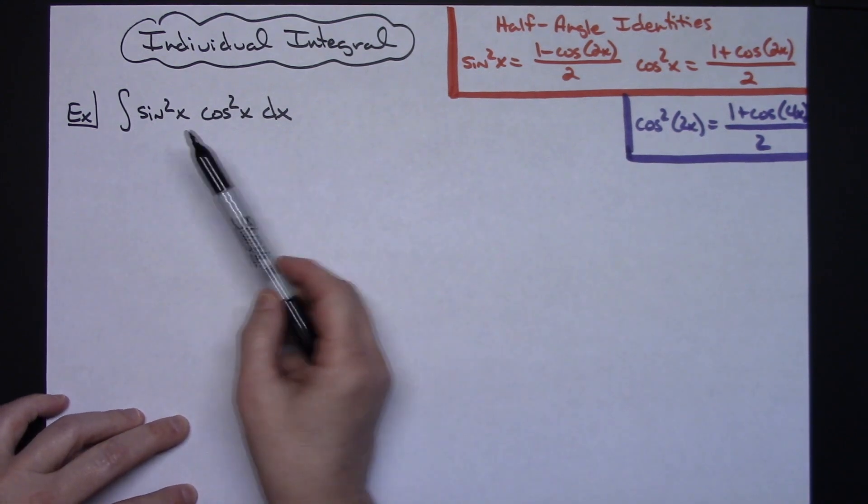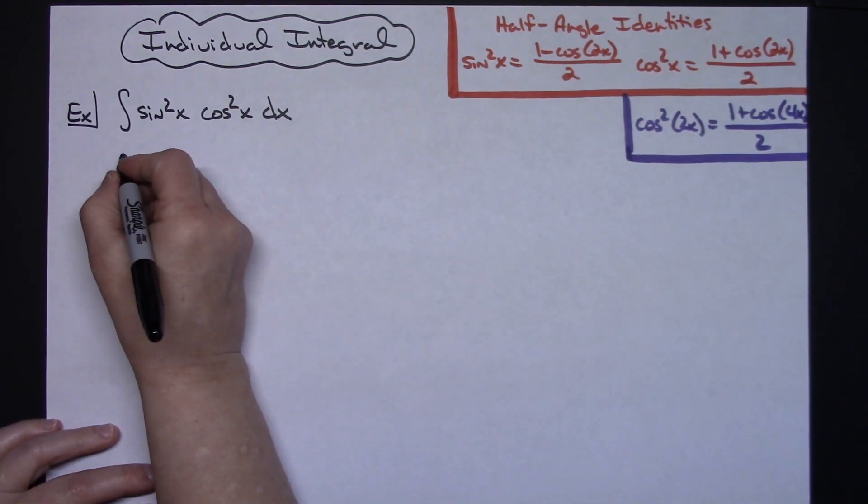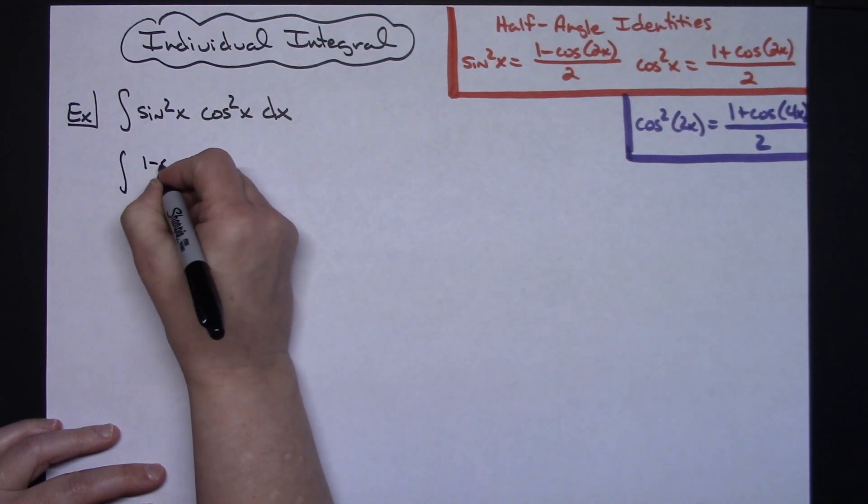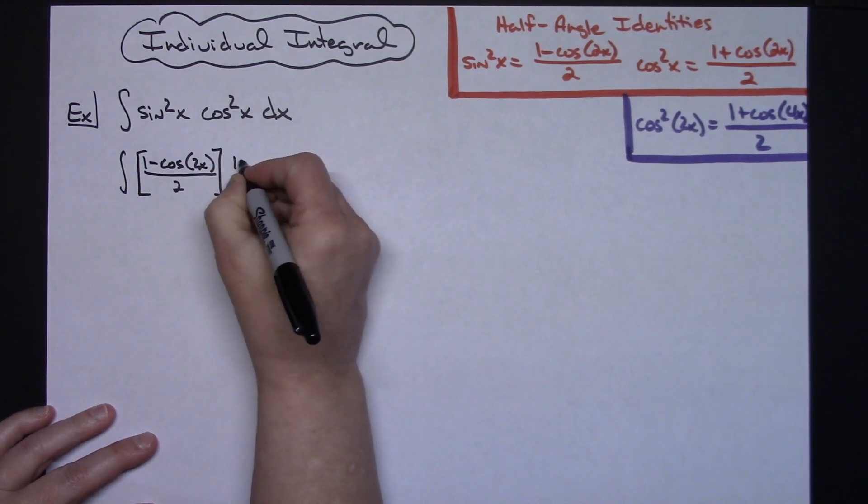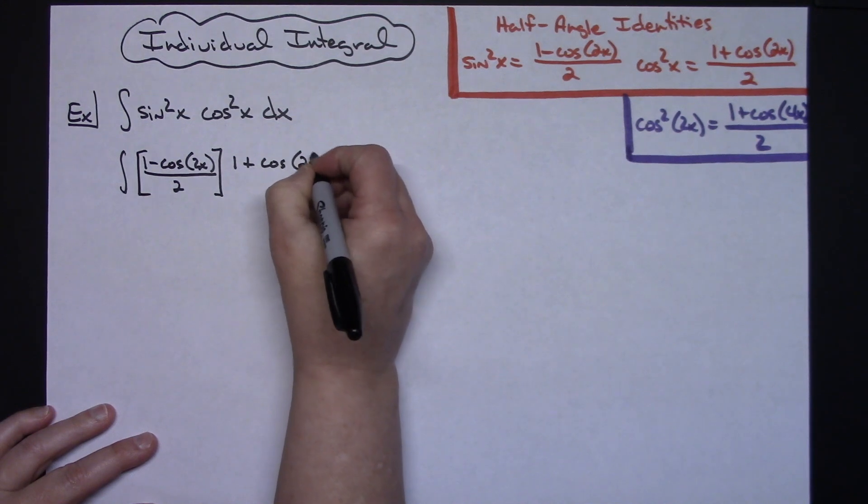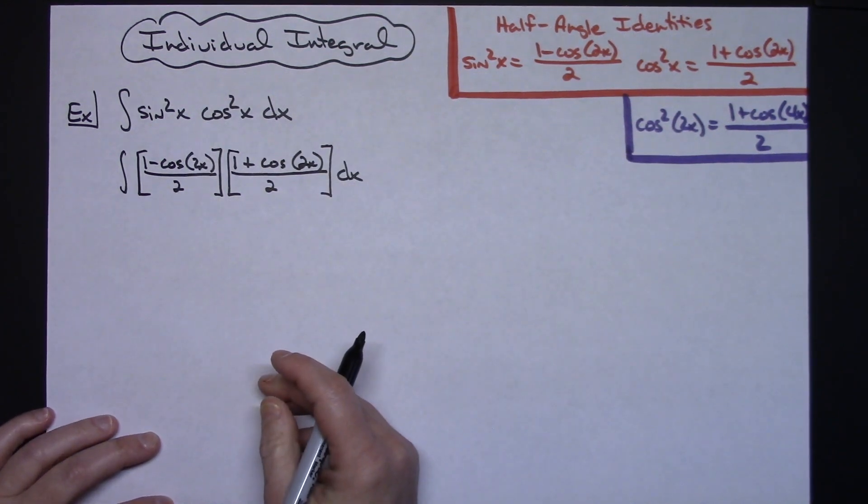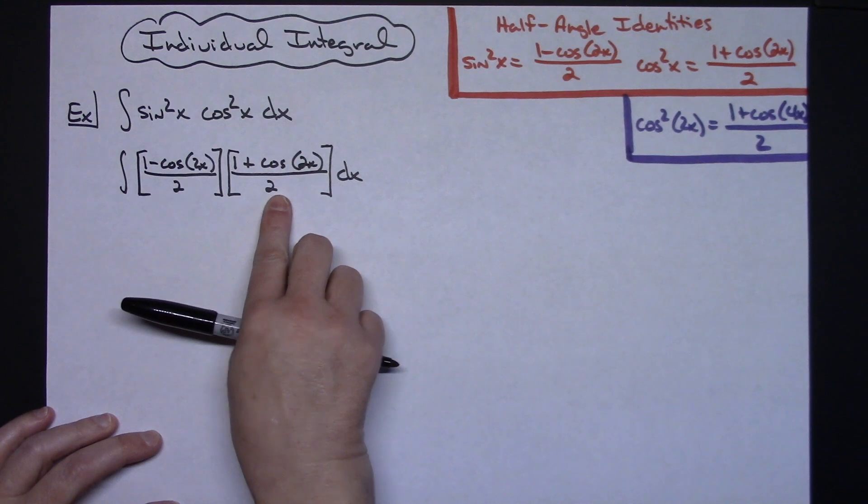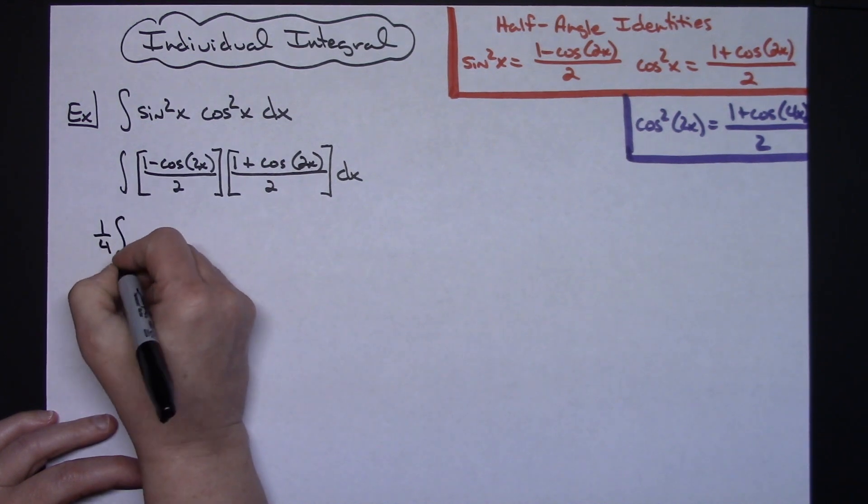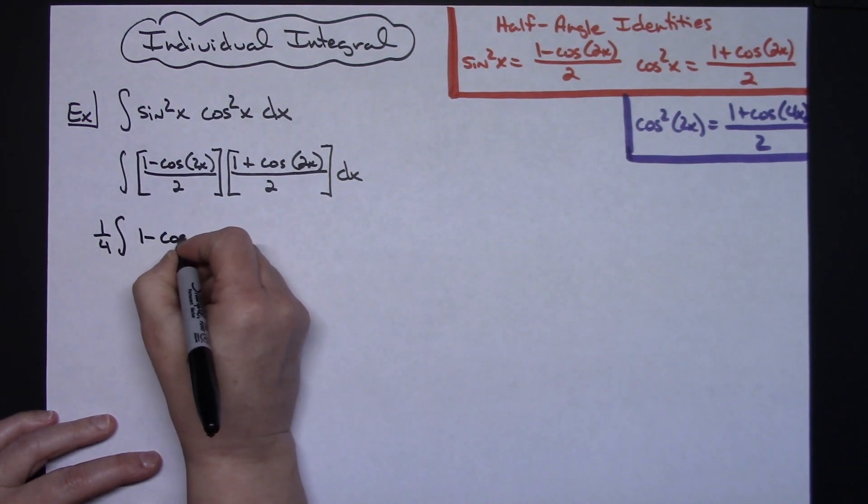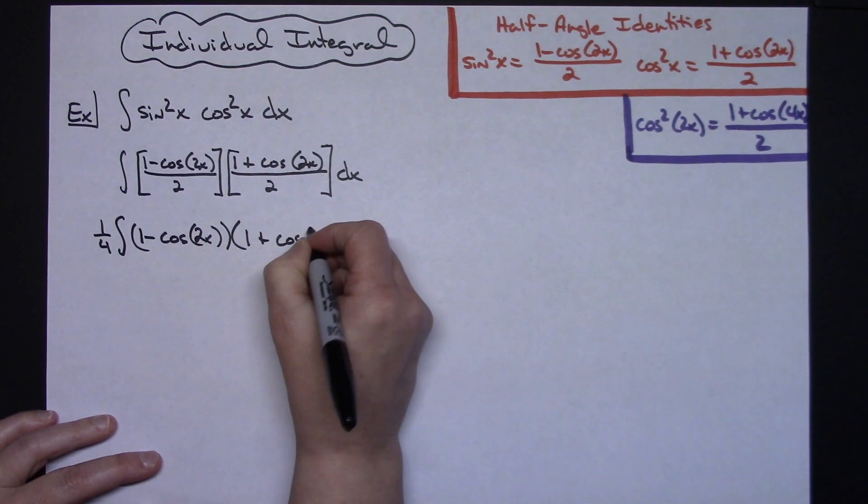So for starters, I've got a sine squared x and a cosine squared x, so I'm going to make those half angle identity substitutions right off the bat. So I'm going to have the integral of 1 minus cosine 2x all over 2 times 1 plus cosine of 2x all over 2. And that's nothing more than just a simple substitution of those identities. Now I'm going to take the 1 half in each of those and pull both out, so that'll pull out a 1 fourth outside my integral. That's going to leave me with 1 minus cosine 2x times 1 plus cosine 2x.